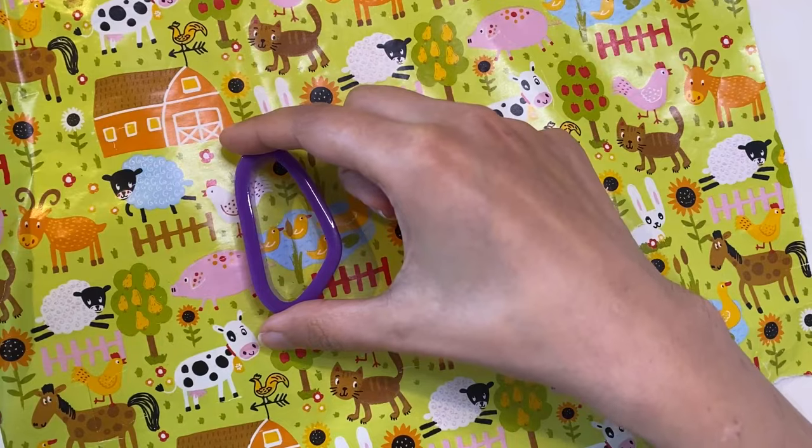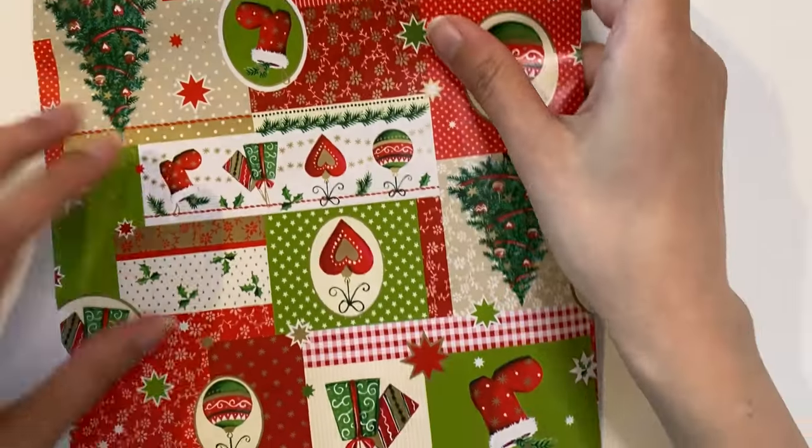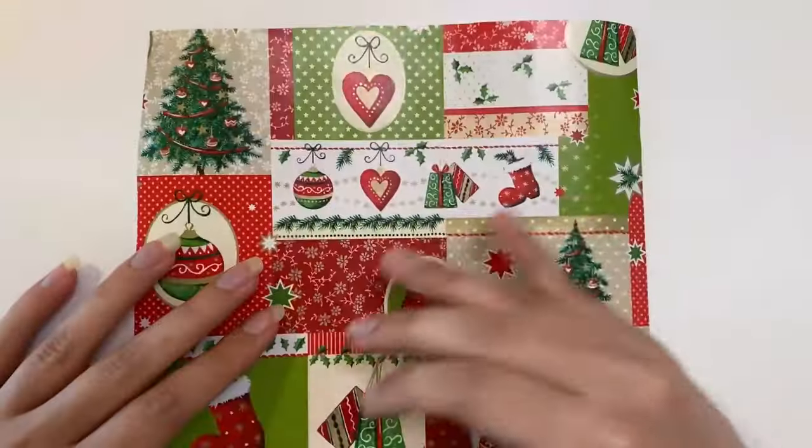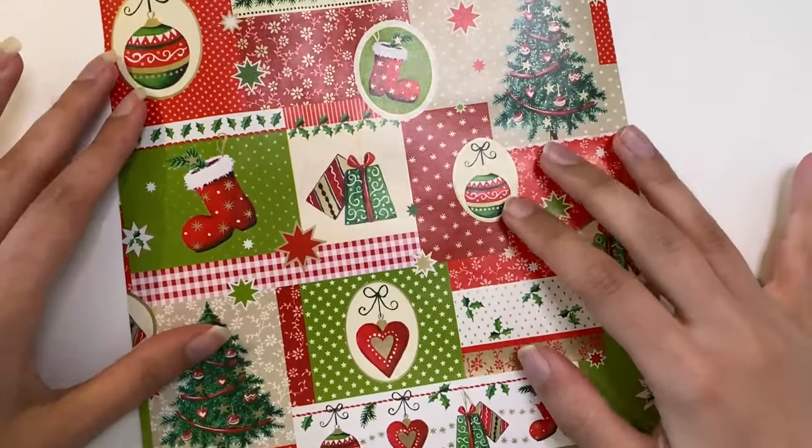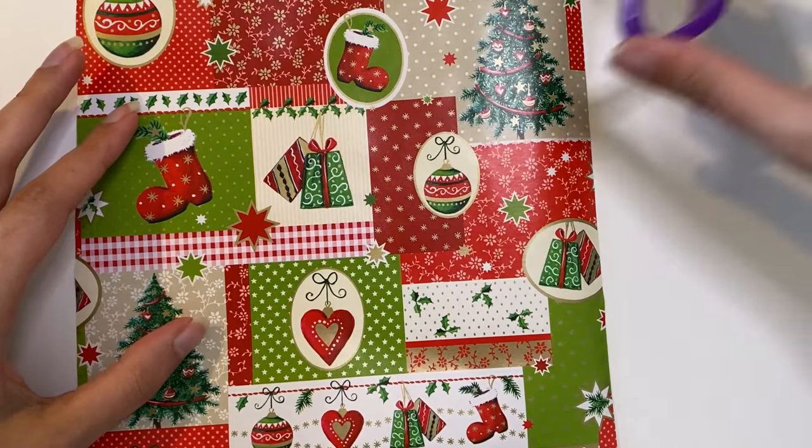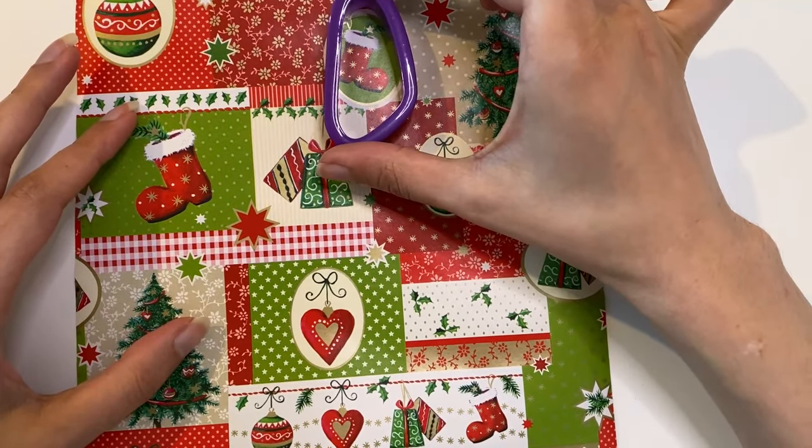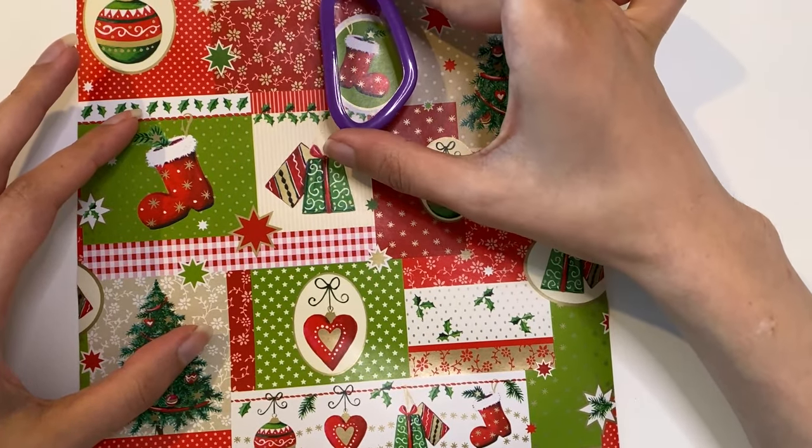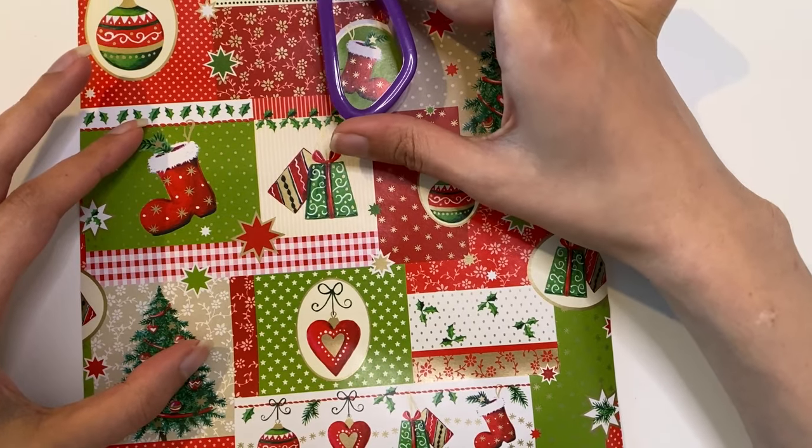I found this wrapping paper with all these tiny Christmas prints and it looks lovely for this project. First, I decide which elements I want to use on my earrings, and then I cut a big rectangle around it.